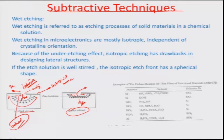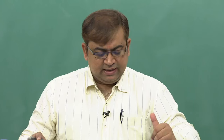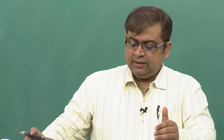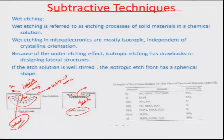The lateral etch rate rl is always greater than the vertical etch rate rv in this unstirred case. So depending on whether the solution is stirred or not, the etching can be completely isotropic or may have some directional properties.